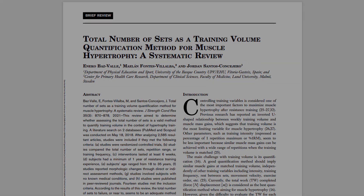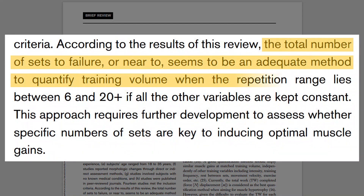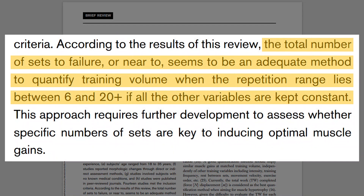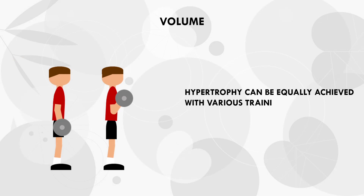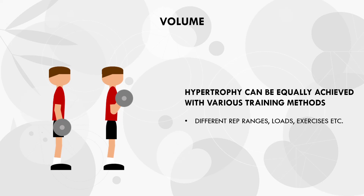It was concluded that if sets are taken close to failure, and rep ranges lie within around 6-20 reps per set, then the total number of sets performed per muscle group per week is an adequate way to quantify volume for hypertrophy training. This is because hypertrophy can be equally achieved using different rep ranges, loads, and different exercises for the same muscle group.